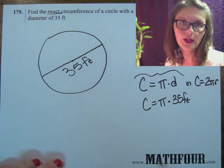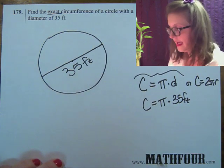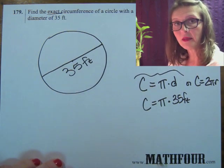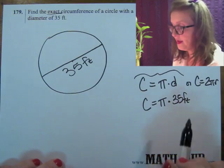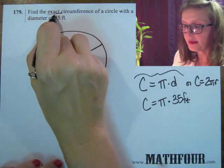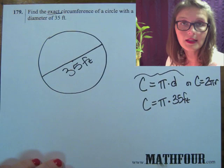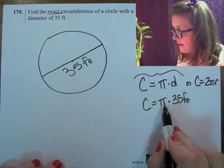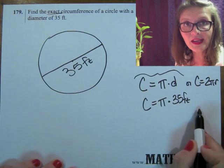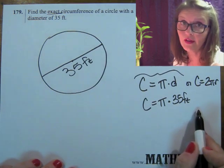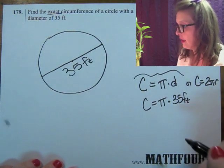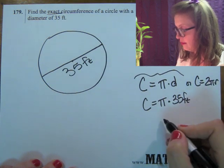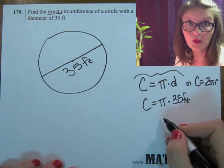Well, what are we going to use for pi? Anything we use for pi is going to be an approximation. And guess where this approximation comes in? That word exact. It doesn't want an approximation, which means what we have is pi times 35 feet is what the exact circumference is, as opposed to some approximation with some real decimals.